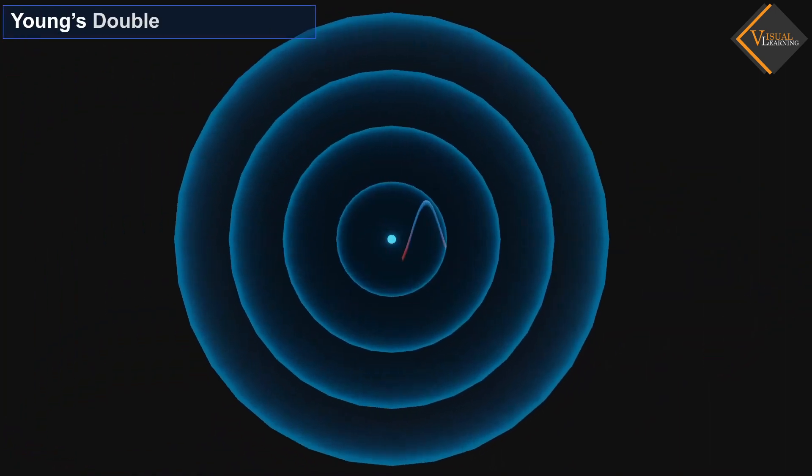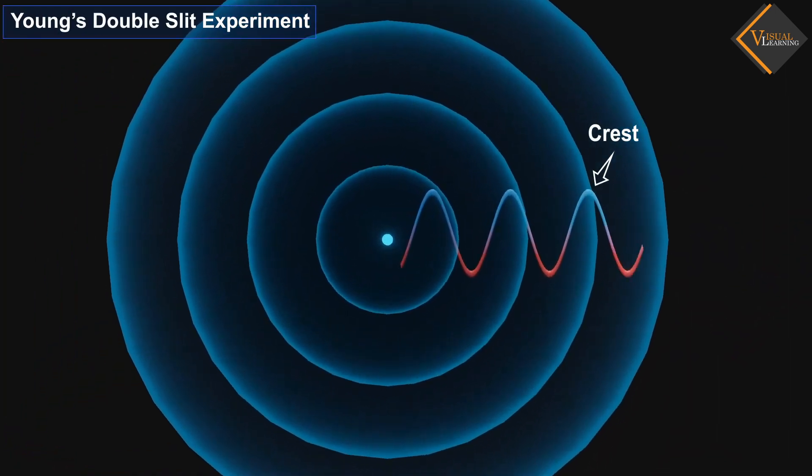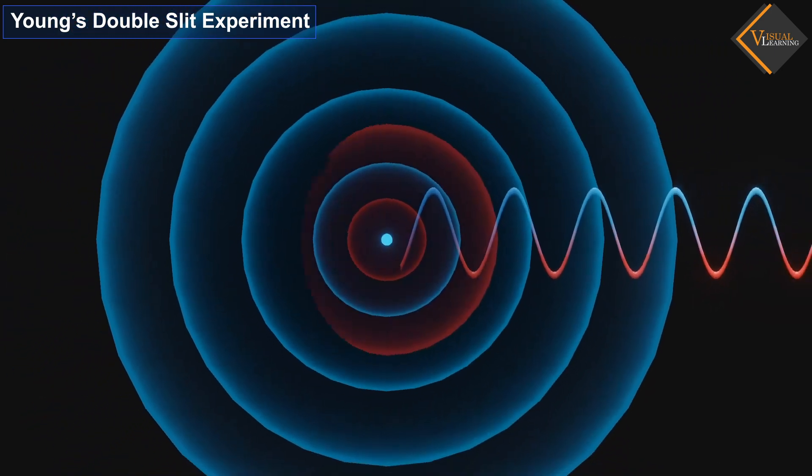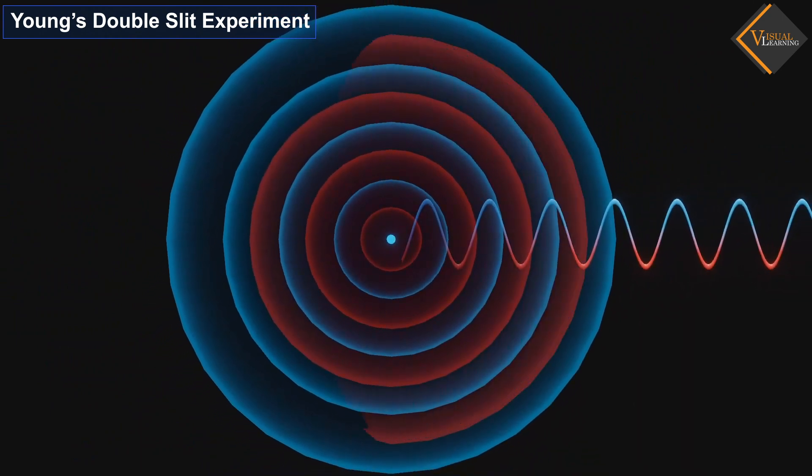We can consider the surfaces of these wavefronts as wave crests, representing the maximum intensity of the light wave, and the areas between two spherical wavefronts as wave troughs, representing the minimum intensity of the light wave. In this light wave, we will consider the blue spherical wavefronts as the crest, and the red spherical wavefronts as the trough.